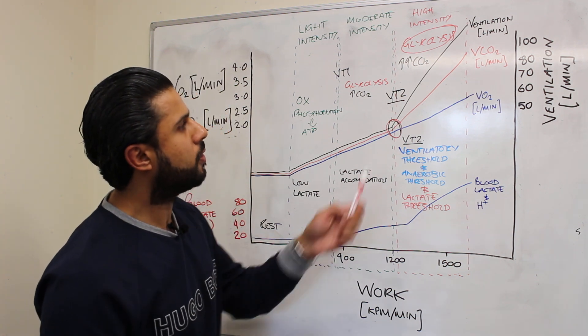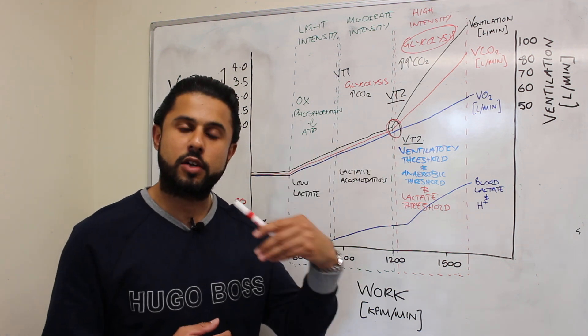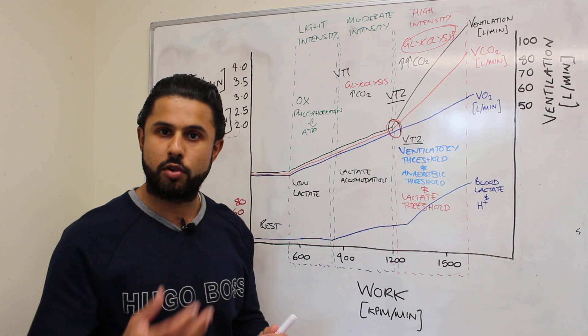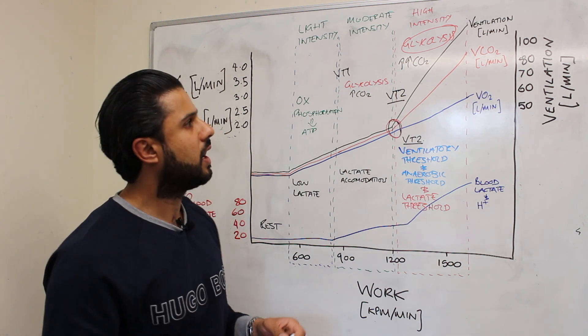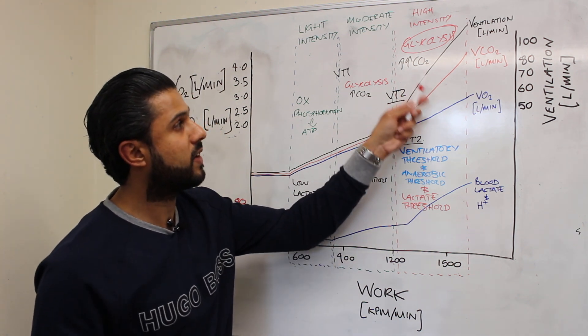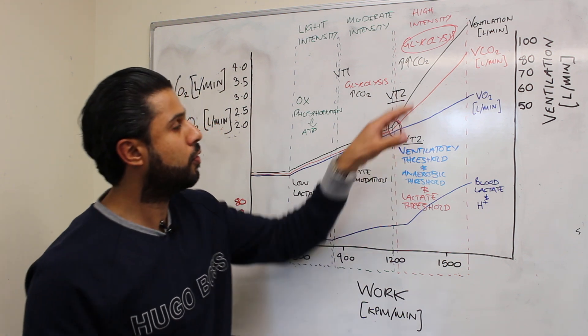And all the while the brain is actually sensing all of these changes through information being sent by the chemoreceptors and is able to adjust the ventilation all the time according to the amount of CO2 that's produced.